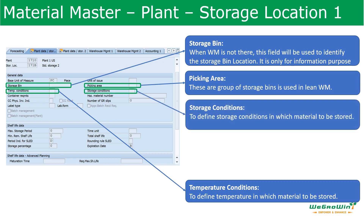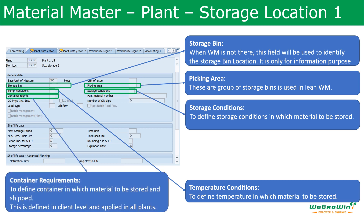Storage Condition is similar to temperature conditions, where we define how the material has to be stored — for example, whether it is bulk storage, rack storage, or similar arrangements. Container Requirements is another field defined at the client level, meaning it is the same for all plants. This field defines what container a material should be stored and shipped in. Configuration has to be done to set these up.